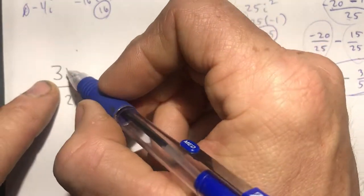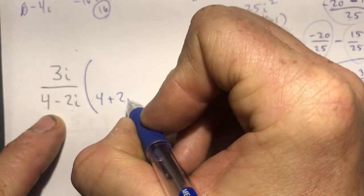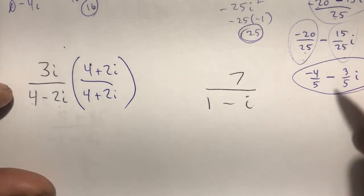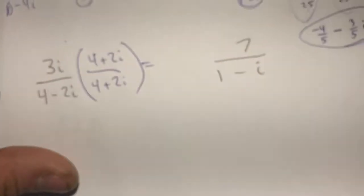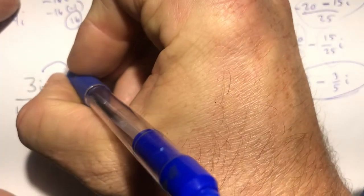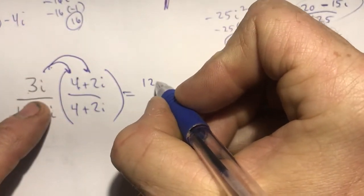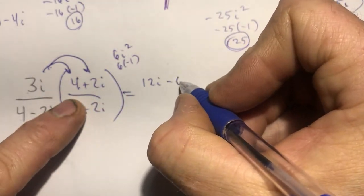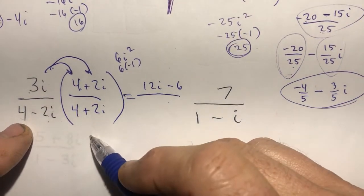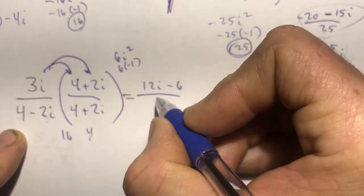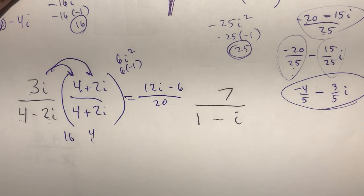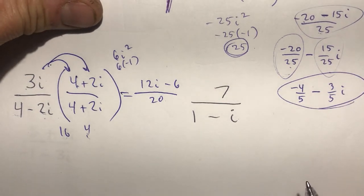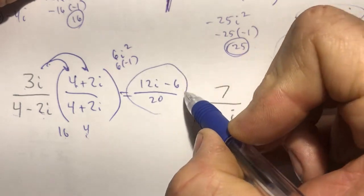Here I have 3i divided by 4 minus 2i. The conjugate of the denominator is 4 plus 2i, so I multiply top and bottom by 4 plus 2i. On the top, distributing: 3i times 4 is 12i, and 3i times 2i is 6i squared — i squared is negative 1 — so that's negative 6. On the bottom, these are conjugates: 4 times 4 is 16, 2 times 2 is 4, add them for 20.